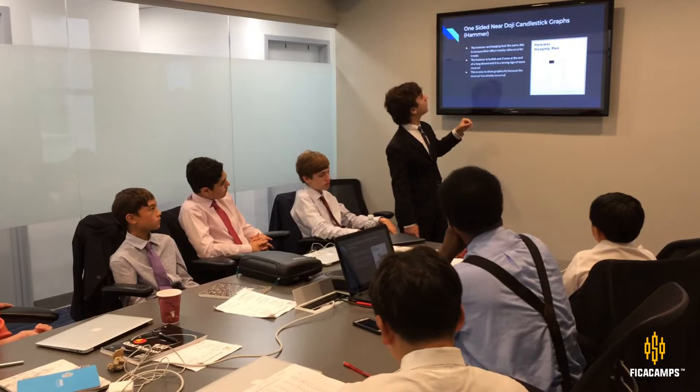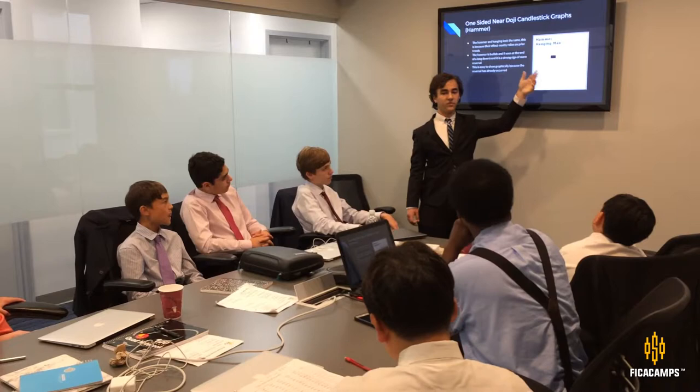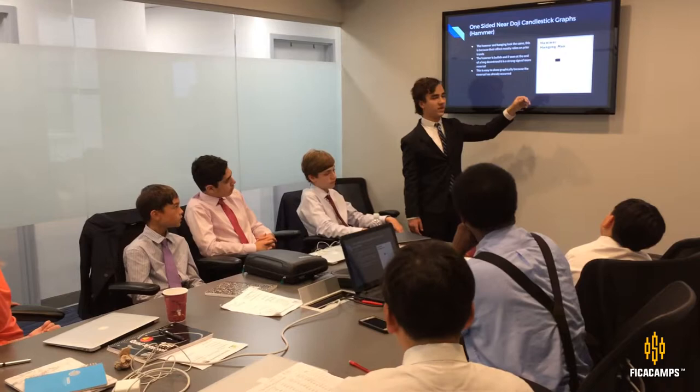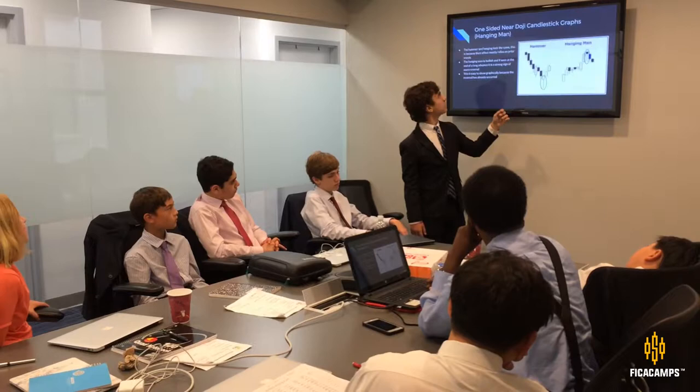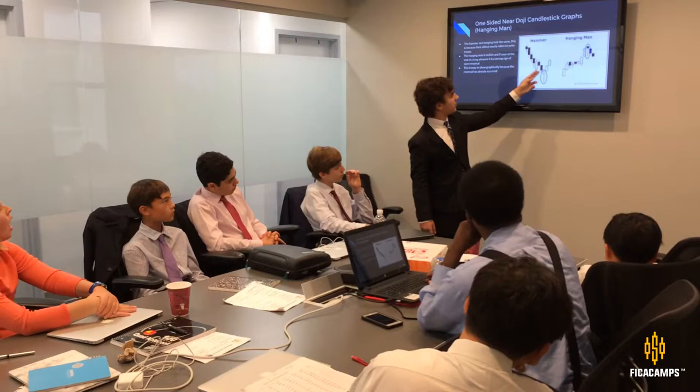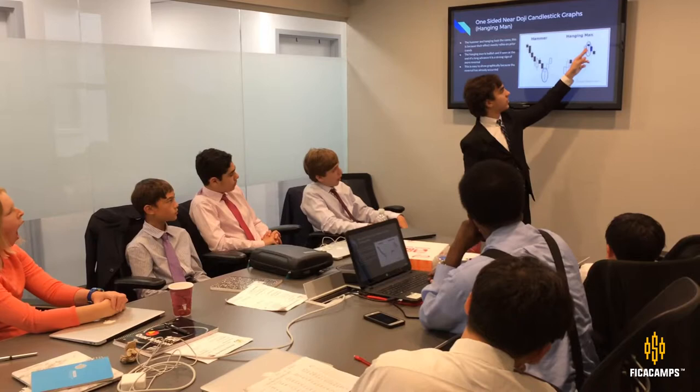Hammer and hanging man look exactly the same except for the colors. The difference between them is what happens before. A hammer is bullish — it comes at the end of a long downward trend and then the price goes back up. The hanging man comes at the end of a large upward trend and it comes back down. The hammer is at the end of a downward trend, goes down and then back up; the hanging man shows a bit of fluctuation and then comes back down.